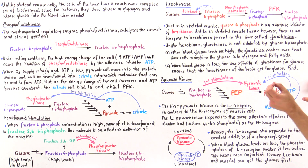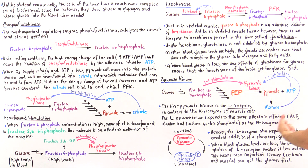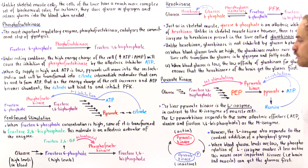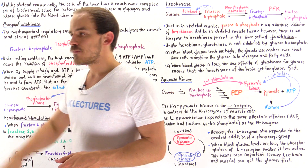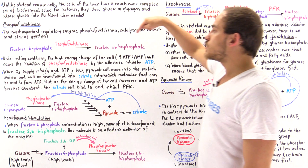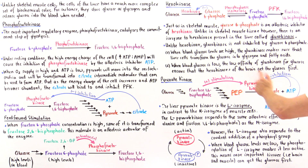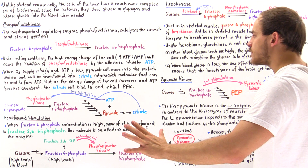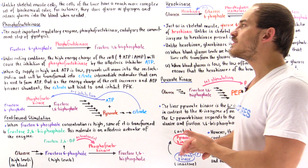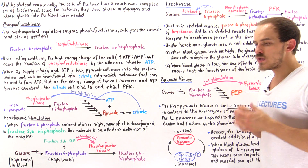Because pyruvate forms building blocks such as amino acids — specifically alanine — high amounts of alanine also create a negative feedback loop that inhibits the activity of pyruvate kinase. But if we have low levels of glucose and low levels of ATP inside our cells, then fructose-1,6-bisphosphate will create a positive feedback loop and stimulate the activity of pyruvate kinase. This is the same mechanism used by pyruvate kinases found in skeletal muscle cells.